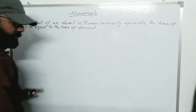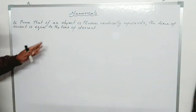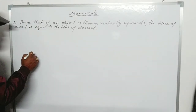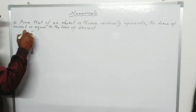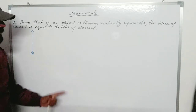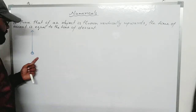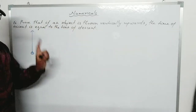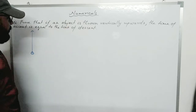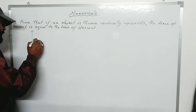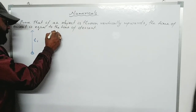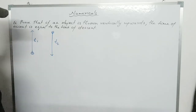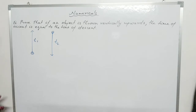The question is: prove that if an object is thrown vertically upward, the time of ascent is equal to the time of descent. That is, T1 equals T2. The object goes up to some height and then comes back down. We have to prove these two times are equal.